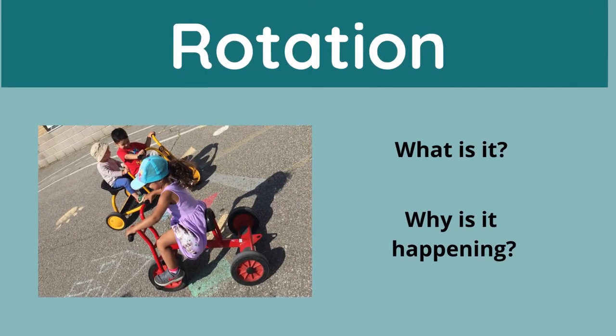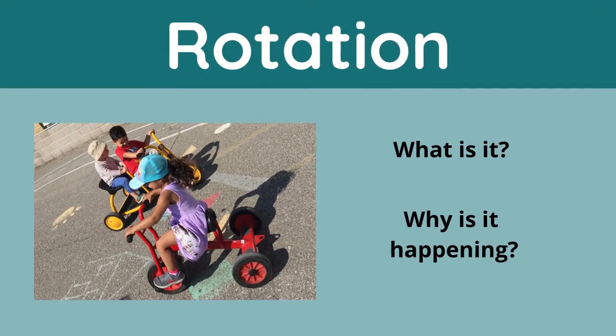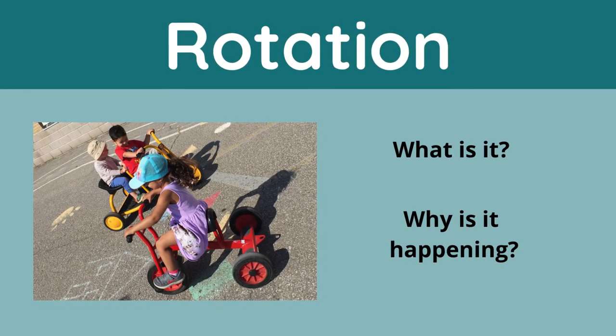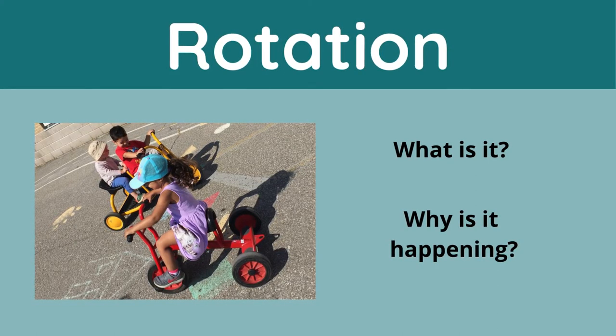What is the rotation schema and why is it happening? It is the fascination with things or movements that are circular. The rotation schema is where your child shows interest in the action of rotating, and they are actively seeking out to interact with things that turn. It is through rotation that children are learning how things move, which builds their thinking on cause and effect.